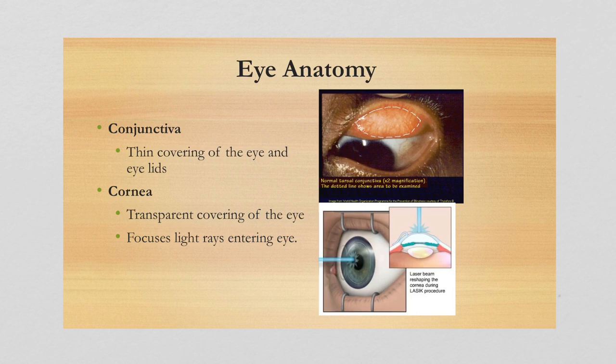The cornea is a transparent covering lying over the pupil and iris. Its major role is to focus light rays entering the eye and transfer light to the pupil. It is the structure that is reshaped during LASIK surgery — a very thin structure, which is why the laser procedure is used.